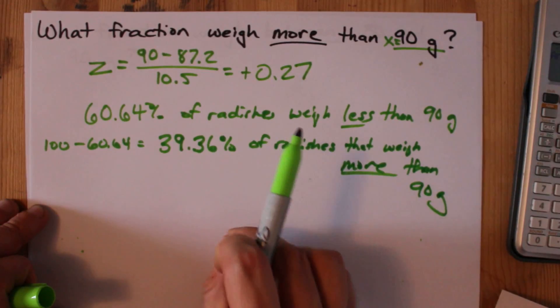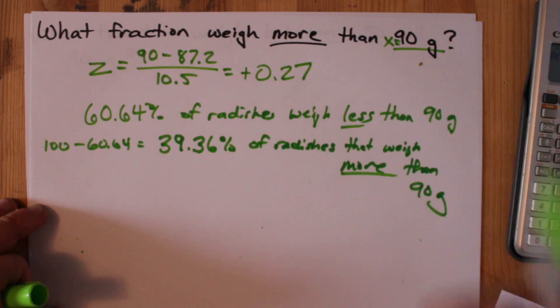You just have to flip the number that the table gives you when you're asked for more than a certain threshold.